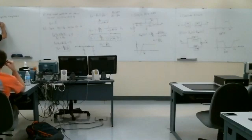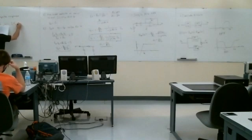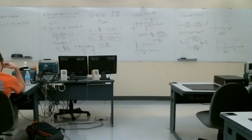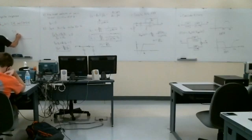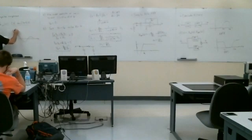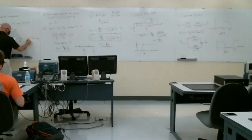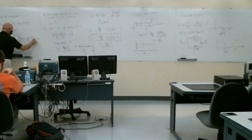The ideal low-pass impulse response in the time domain is h(t) = 2fc · sinc(2π·fc·t). This is a sinc function with height 2fc, and zeros at ±1/(2fc), ±2/(2fc), ±3/(2fc), and so on. You should find this in your table of Fourier transforms.